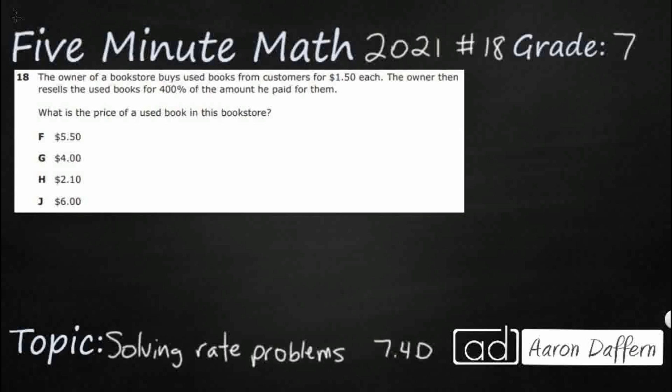So we have the owner of a bookstore. He buys books for $1.50 each, then he resells it for 400% of the amount. So this is a percent change problem, which makes sense. If he wants to make money, he's got to sell the books for more than he purchased them for. And so we want to know, what's the price of a used book in the store? What is that percent change? So there's a few different ways that we could use to solve this problem.